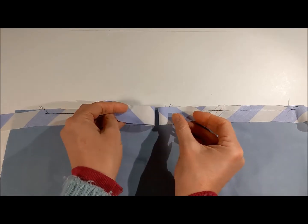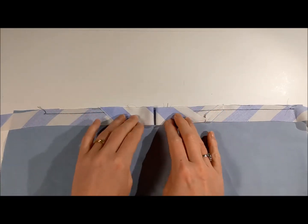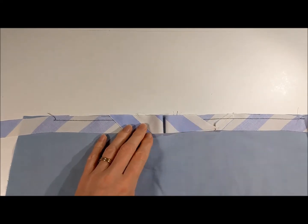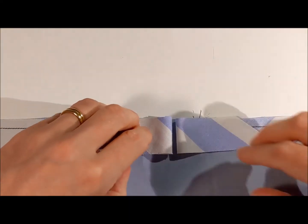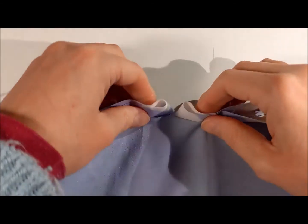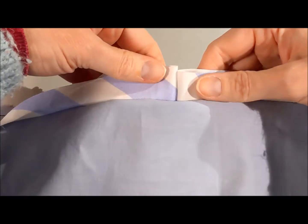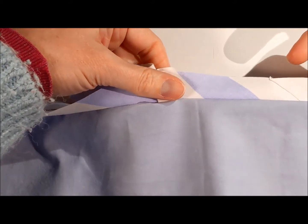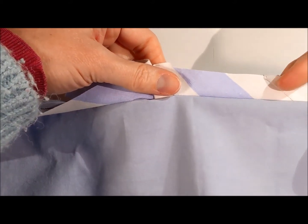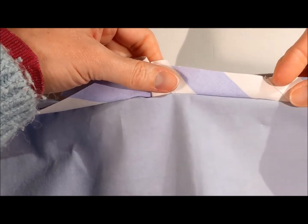I can either join them like so and it will have a straight looking join, or if I want it to have the diagonal join which is sewn on the straight of the grain,